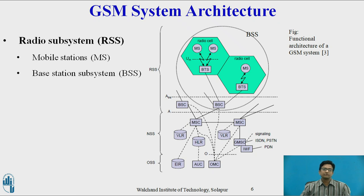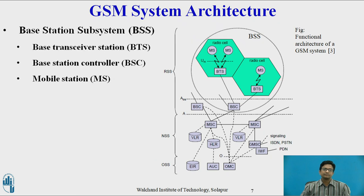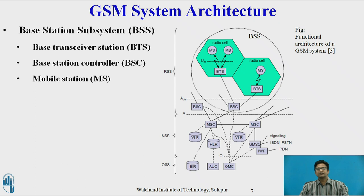The Radio Subsystem consists of Mobile Station (MS) and Base Station Subsystem (BSS). The connection between RSS and NSS is established via the A Interface, shown as solid lines, and the connection to OSS is via the O Interface, shown as dashed lines. The BSS consists of BTS (Base Trans Receiver Station), BSC (Base Station Controller), and Mobile Station. BSS maintains a radio connection between MS and BTS, and is responsible for coding and decoding of voice.